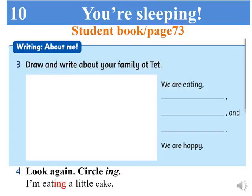After that, you will draw a picture of your family at Tet. We will finish Task 3. Now use your pencil and circle the ING form of verb. For example: 'We are eating' — you circle the ING form of the verb.